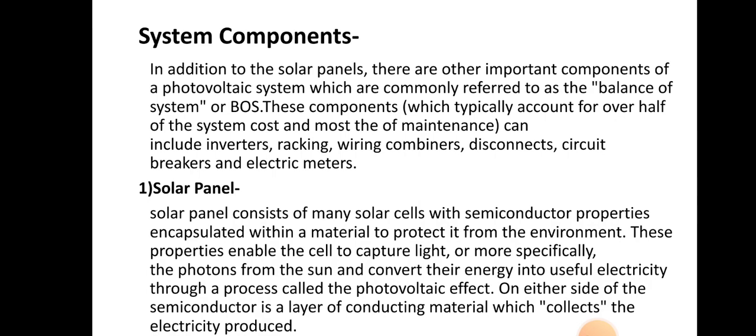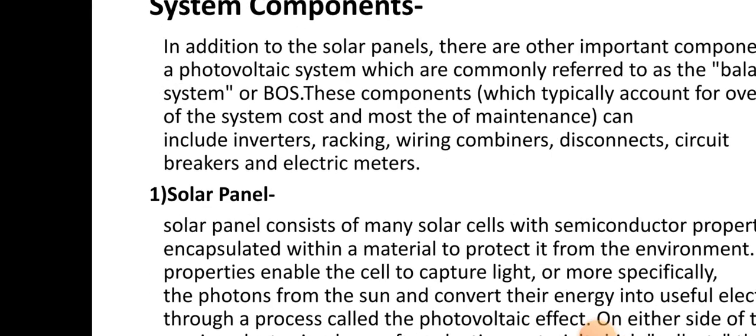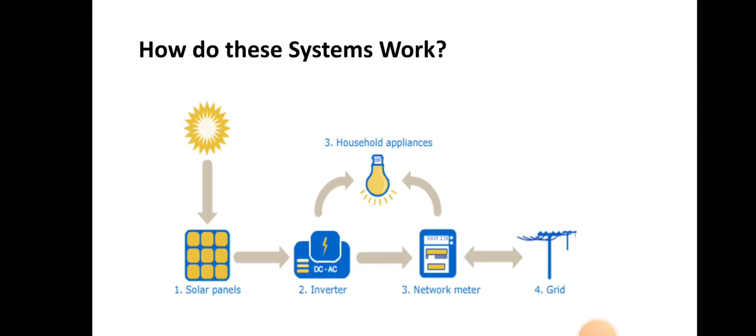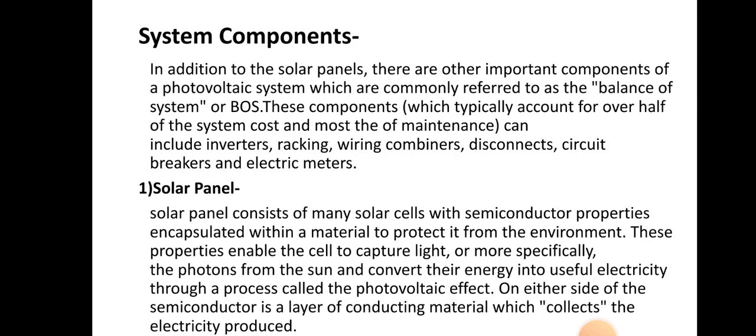Those who have not seen the last video can see it. The main topic of today's lecture is the photovoltaic system components. The photovoltaic system consists of a number of parts — as shown in the figure, there are four parts. In addition to the solar panel, there are other important components of a photovoltaic system, commonly referred to as the Balance of System or BOS. These components typically account for over half of the system cost and most of the maintenance.